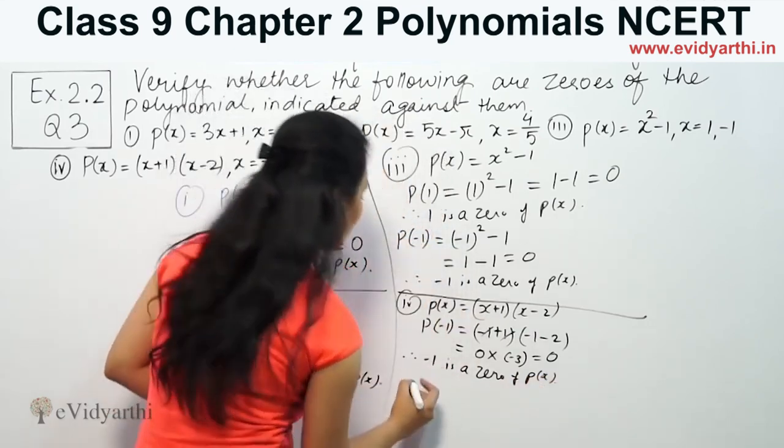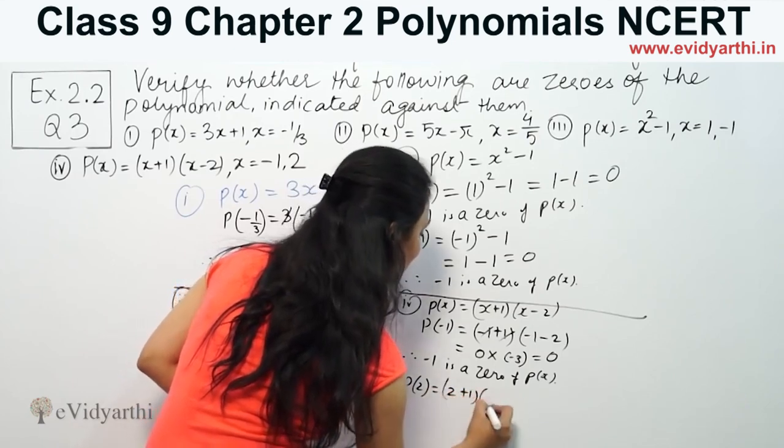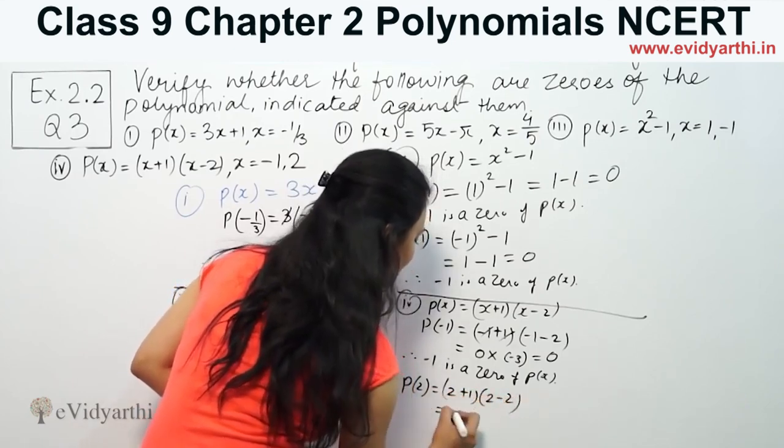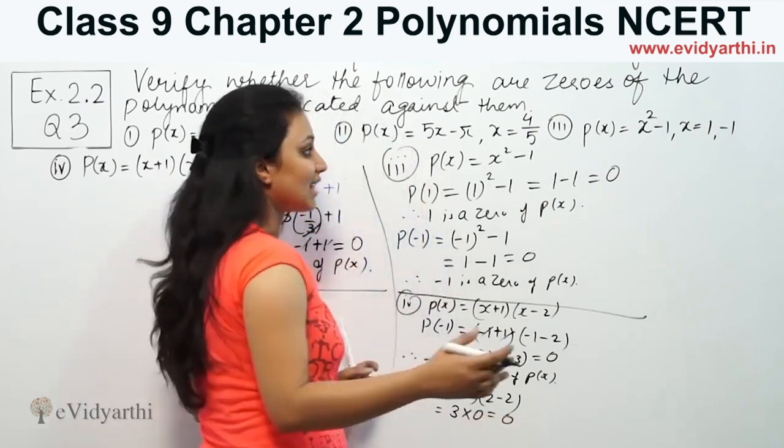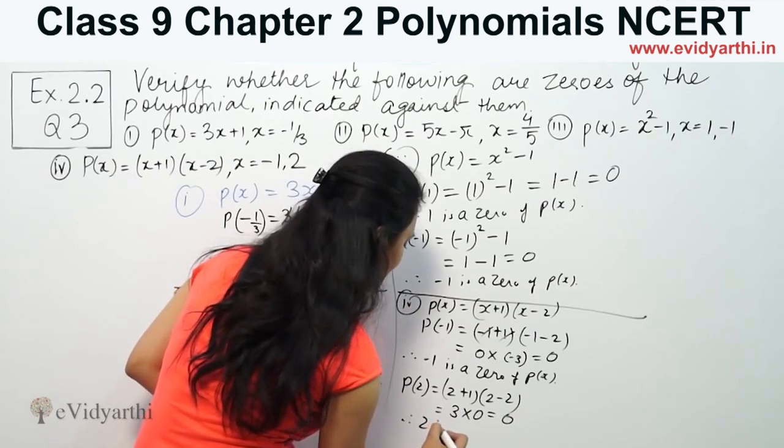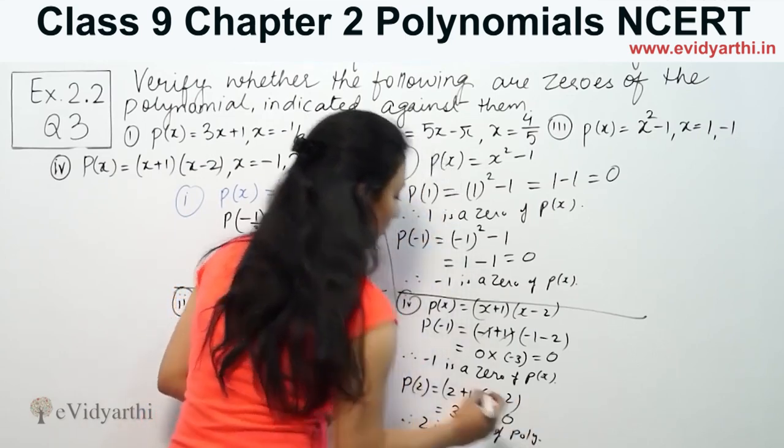Now let's check P(2). P(2) = (2+1)(2-2) = (3)(0) = 0. Answer is 0, that means 2 is also a zero of the polynomial.